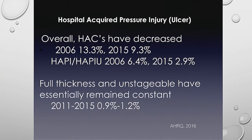Looking at hospital-acquired pressure injuries overall: hospital-acquired conditions have actually decreased based on Agency for Healthcare Research and Quality data. In 2006, hospital-acquired conditions were reported at about 13%, decreasing to 9.3% in 2015. Hospital-acquired pressure ulcers also showed a decrease from 6.4% to 2.9%. However, pressure injuries have started to incrementally increase since this data was published.